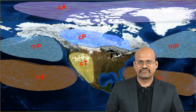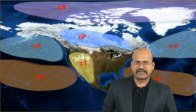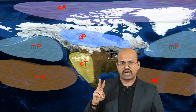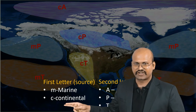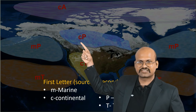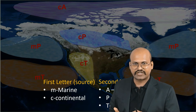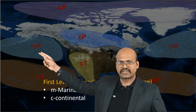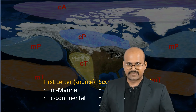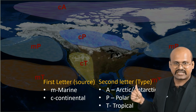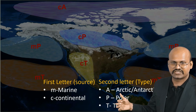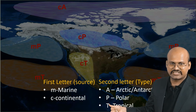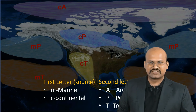Air masses are named based on their source region and type using two letters. The first letter indicates the source region: 'M' stands for marine and 'C' for continental. The second letter indicates the type: 'A' is for Arctic or Antarctic meaning very cold, 'P' is for Polar meaning cold, and 'T' is for Tropical meaning hot. So for example, a continental tropical air mass would be designated 'CT'.